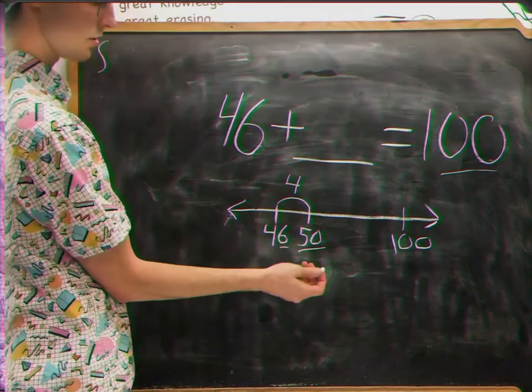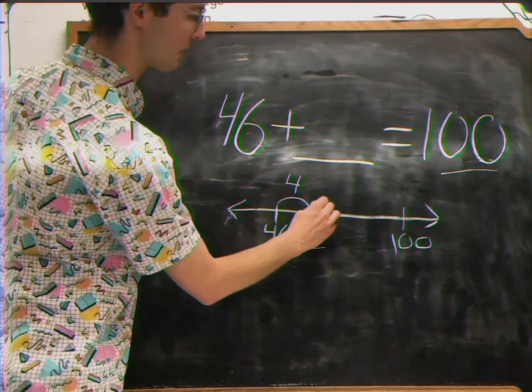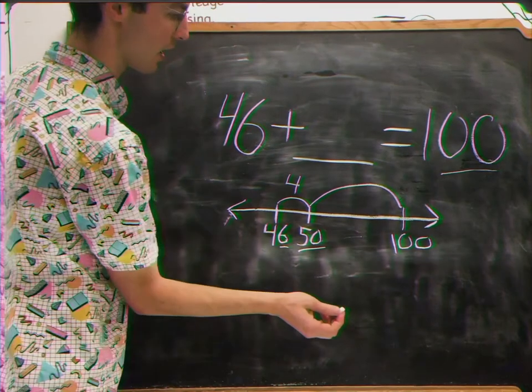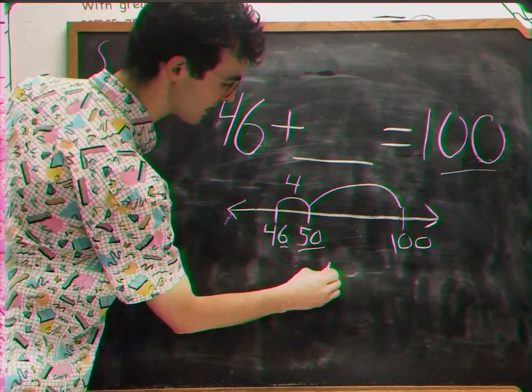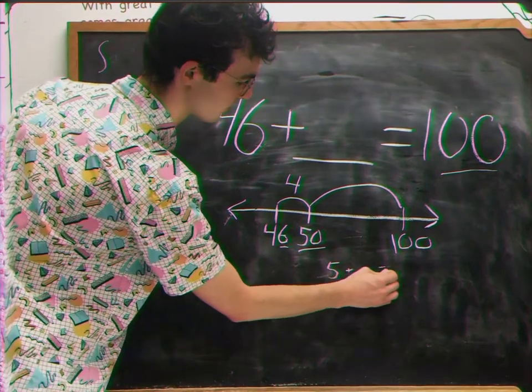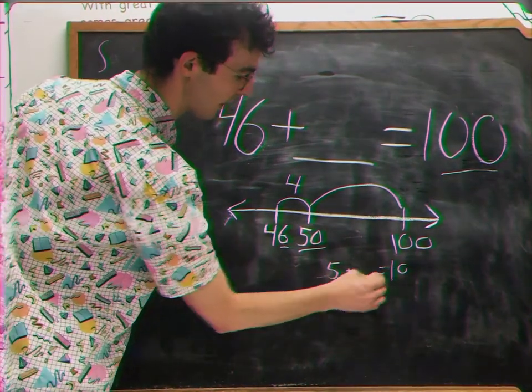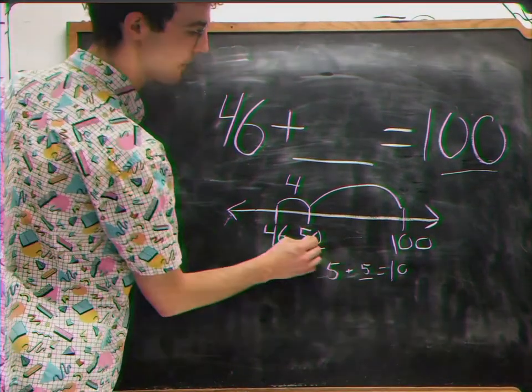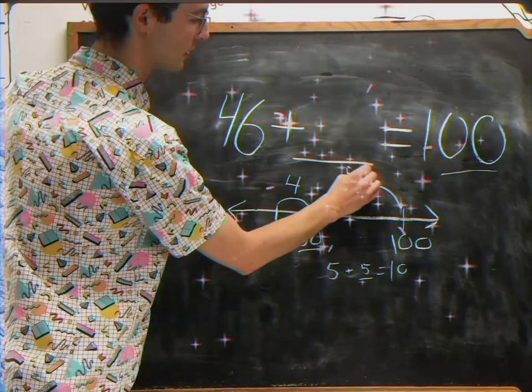And then you'll just do the next jump. So how far is it from 50 to 100? Which is kind of the same as asking 5 and what makes 10? So 5 and 5 makes 10, so 50 and 50 make 100.